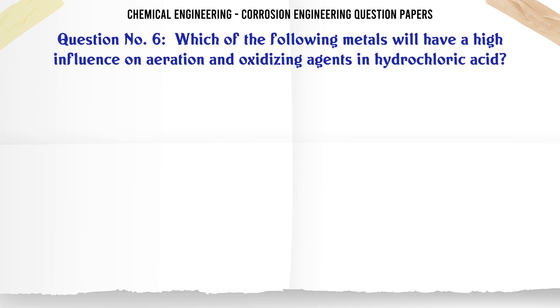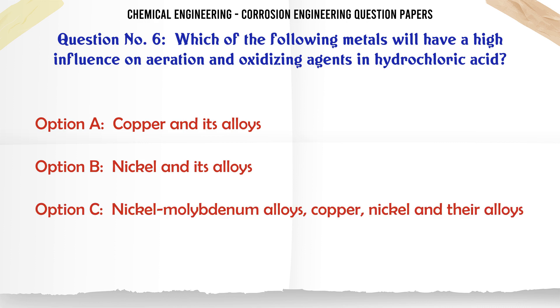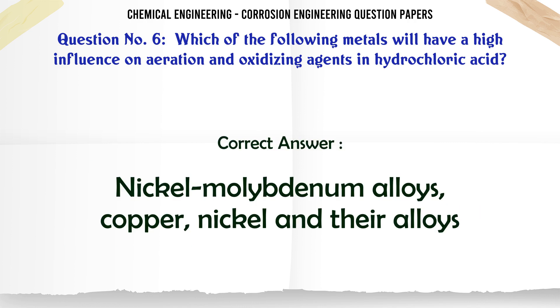Which of the following metals will have a high influence on aeration and oxidizing agents in hydrochloric acid? A. Copper and its alloys. B. Nickel and its alloys. C. Nickel-molybdenum alloys, copper, nickel, and their alloys. D. Nickel-molybdenum alloys. The correct answer is: Nickel-molybdenum alloys, copper, nickel, and their alloys.